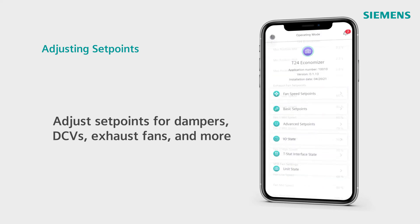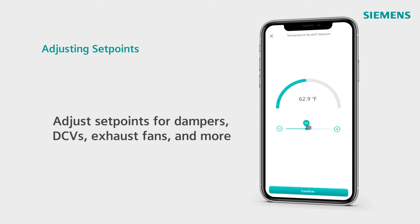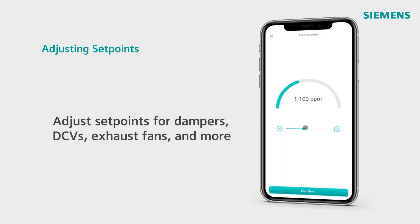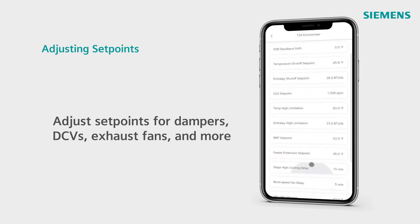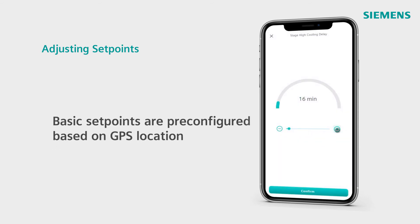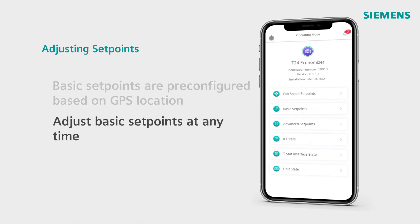You can also access basic set points that are pre-configured on the controller, such as your temperature shutoff, your CO2 limits, mixed air and freeze protection set points, and delays. These set points can be configured automatically based on your GPS location and the ASHRAE climate table, but you can also adjust them manually at any time for optimum performance and energy savings.